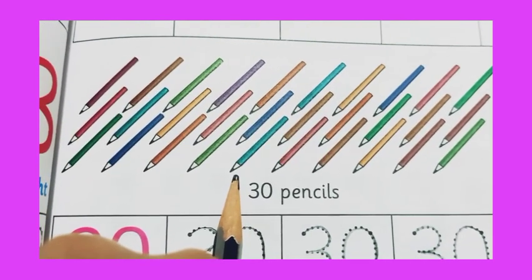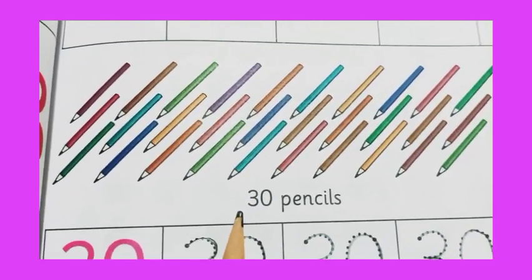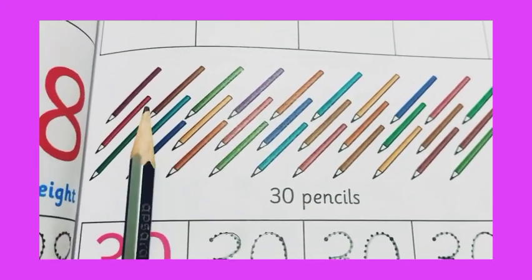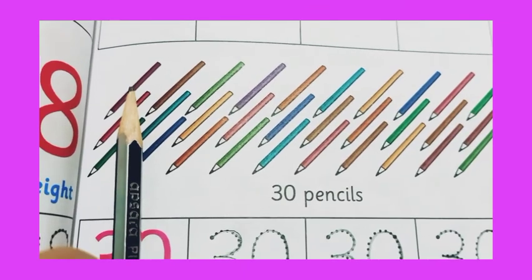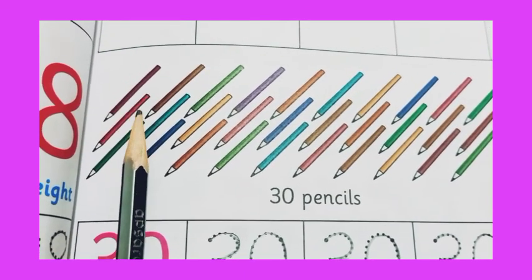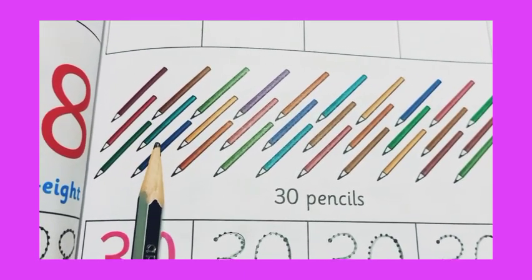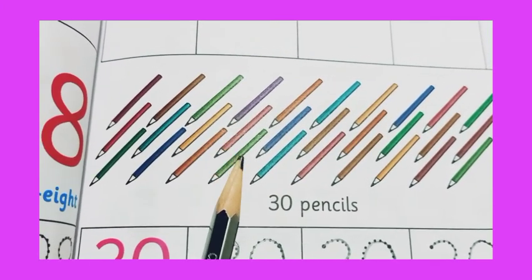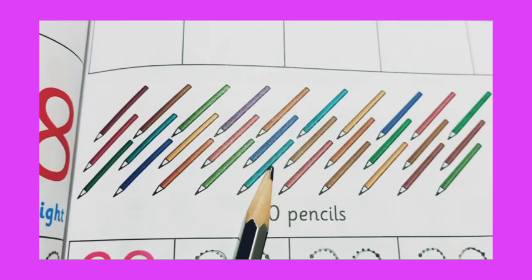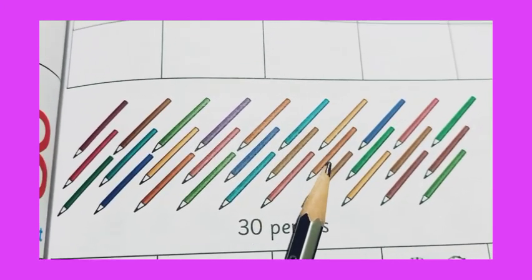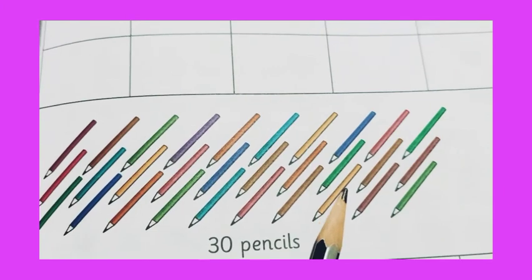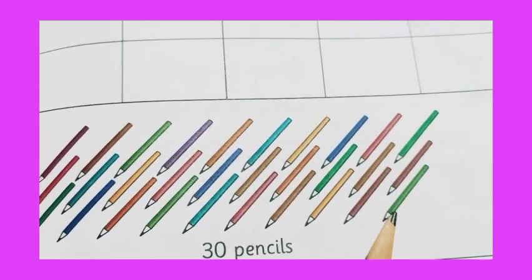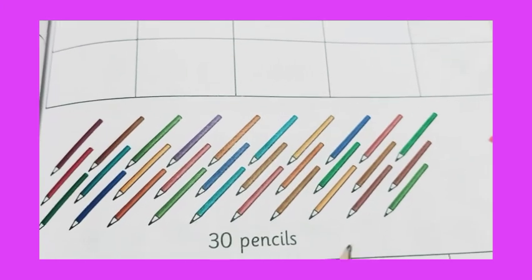See students, here you will see many pencils, different colors. Now we have to count these pencils. Let's start. 1, 2, 3, 4, 5, 6, 7, 8, 9, 10, 11, 12, 13, 14, 15, 16, 17, 18, 19, 20, 21, 22, 23, 24, 25, 26, 27, 28, 29, 30. How many pencils are here? 30.